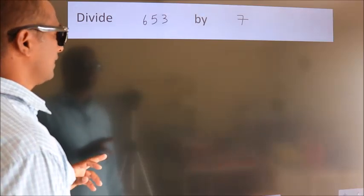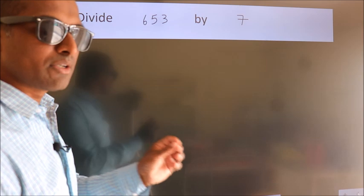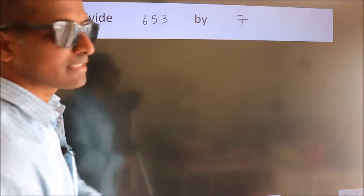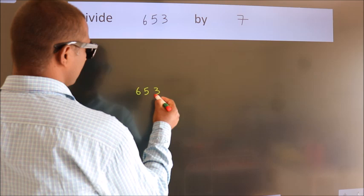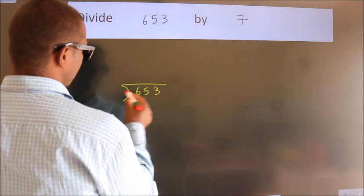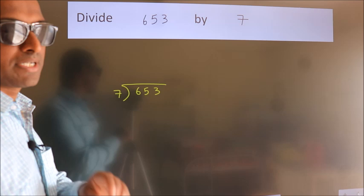Divide 653 by 7. To do this division, we should frame it in this way: 653 here, 7 here. This is your step 1.